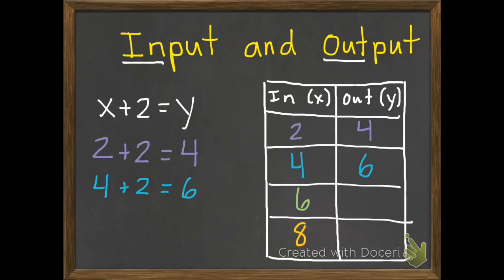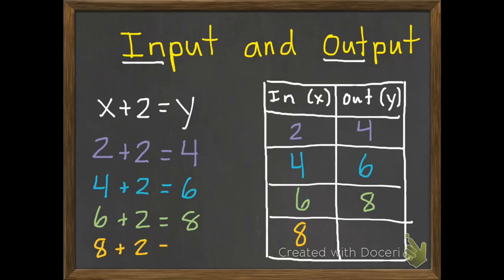My next number I picked to put in was a 6. So 6 in for x, plus 2, equals 8 — put 8 in our table. And our last number I picked was an 8, so 8 plus 2 equals 10. Remember, I could have picked any number I wanted to put in, and we'll see what we get out.